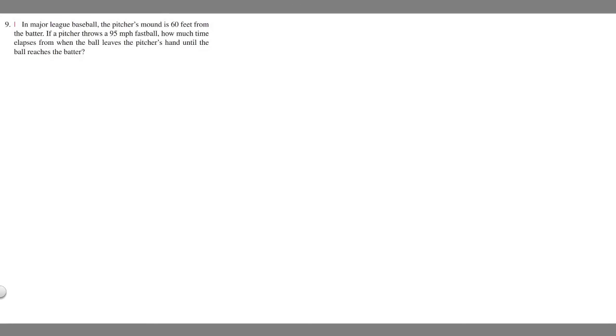In this problem we're told in Major League Baseball the pitcher's mound is 60 feet from the batter. If a pitcher throws a 95 mile per hour fastball, how much time elapses from when the ball leaves the pitcher's hand until the ball reaches the batter?